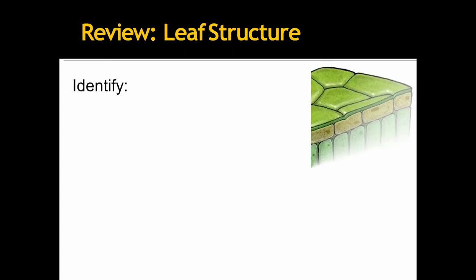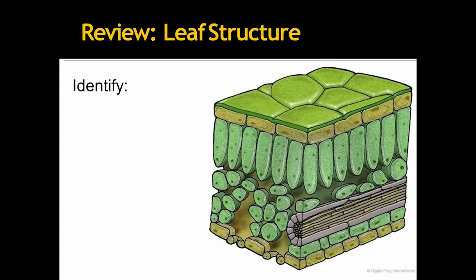Now, this is the structure of leaf. This is the three-dimensional structure. Here, it is a TS or transverse section. Can you tell where the cuticle is? Yes, the upper portion, the upper glossy portion of the leaf, the green colored glossy portion is known as the cuticle.